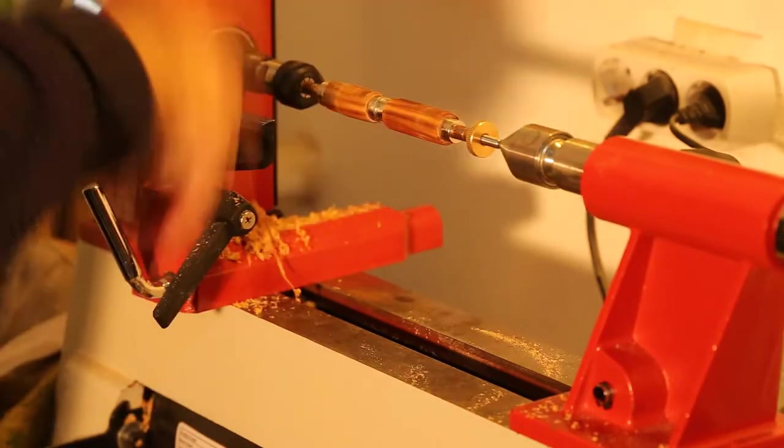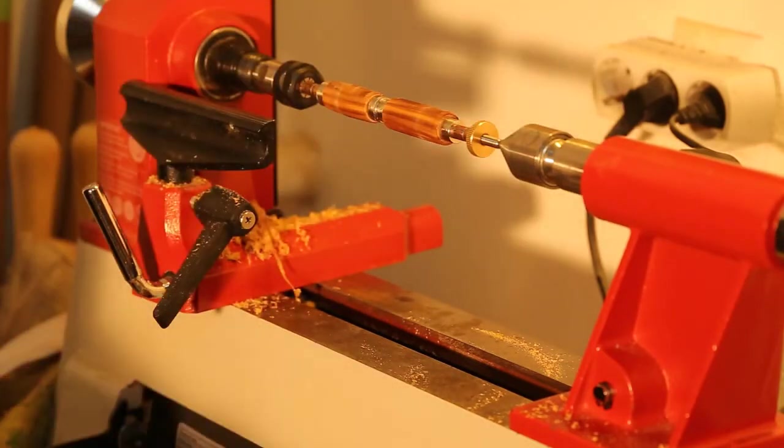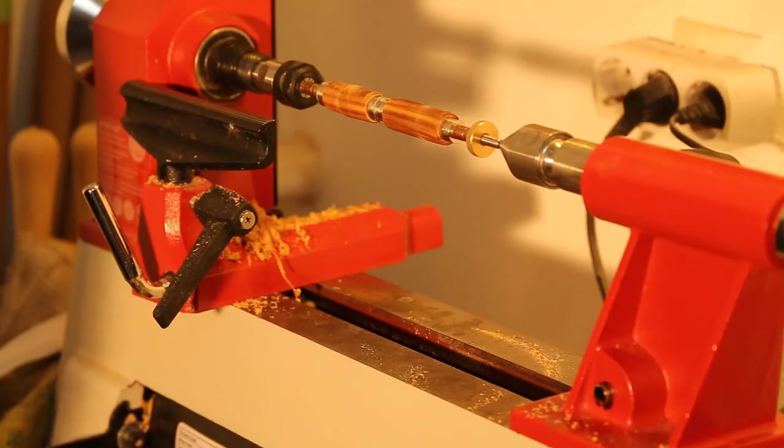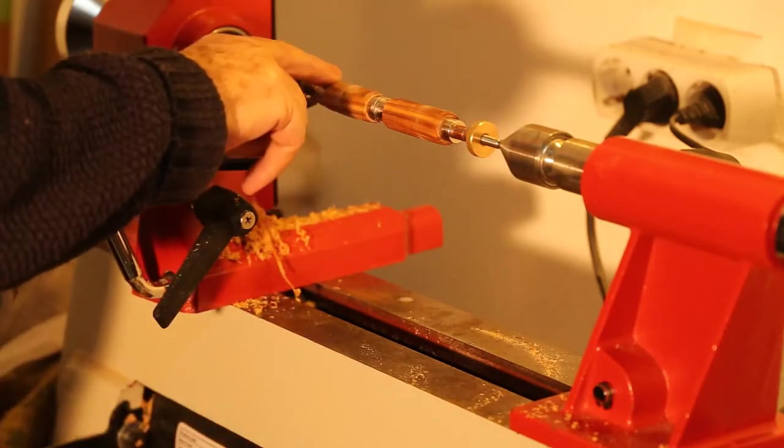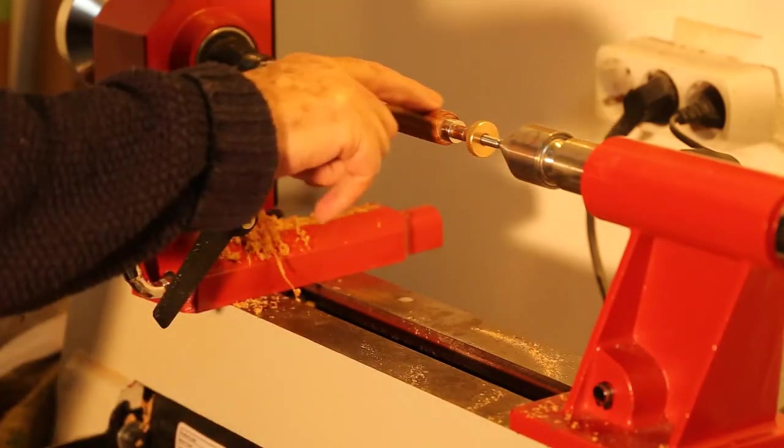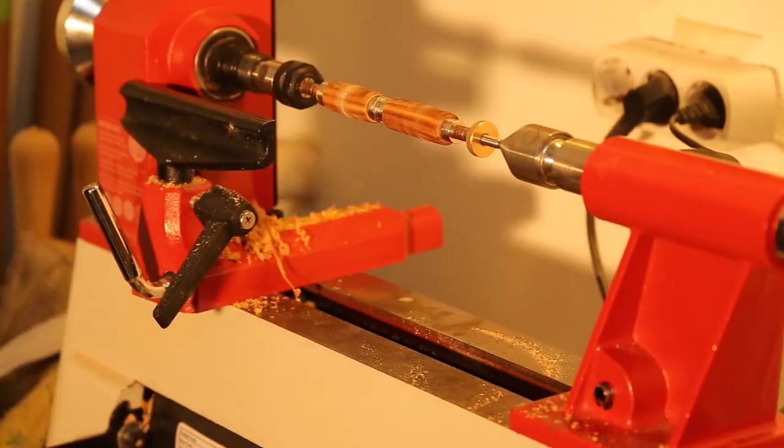As I take more off I put more super glue on. Let it harden. Spin it again. Take more off. It's just a way of making sure that you don't get cracks, particularly on the ends. Because if it cracks, you've wasted your time.